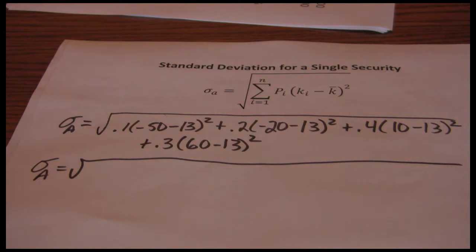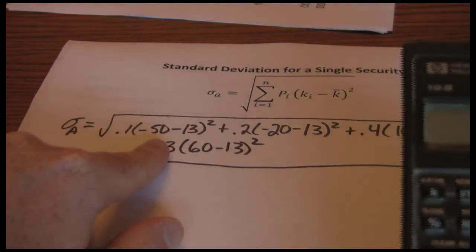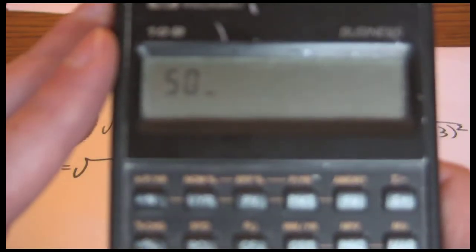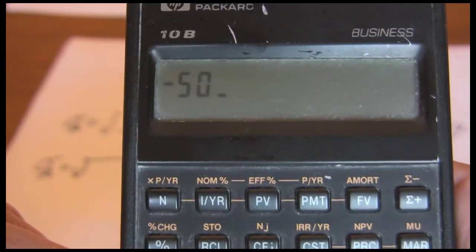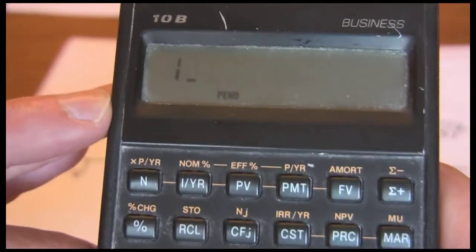We want to start out with the first thing. Order of operations says do what's within parentheses first. Negative fifty. And don't drop the negative sign. That's not fifty. It's got to be negative fifty. Make sure you use the plus minus key to make that negative. Minus thirteen.